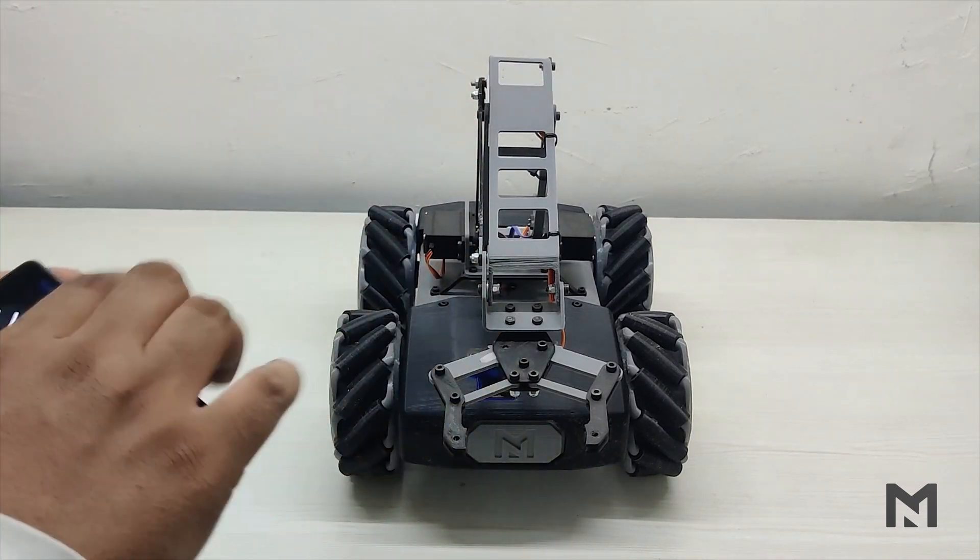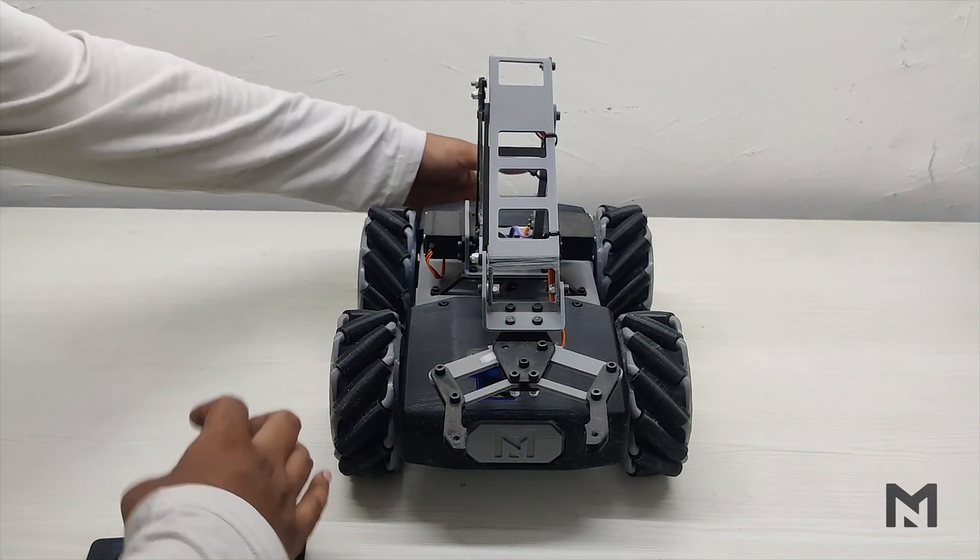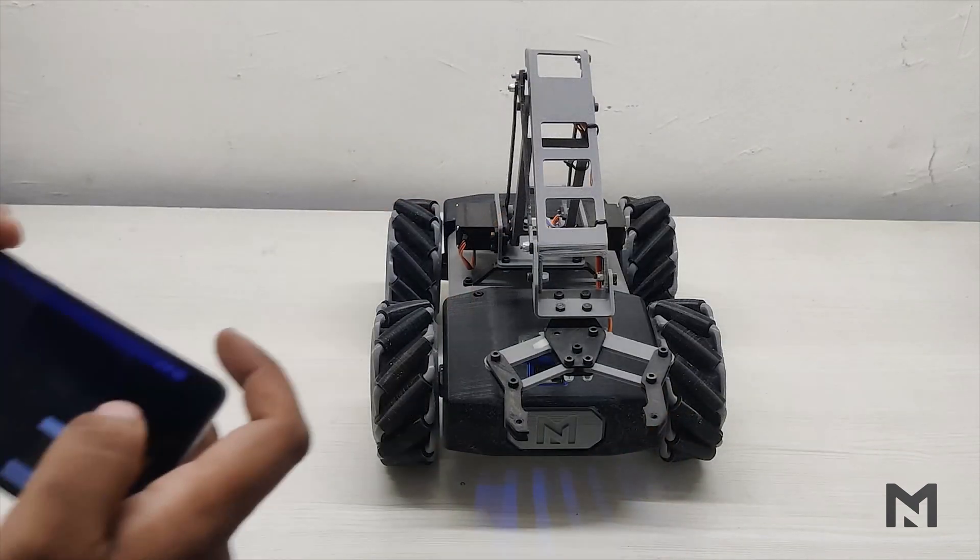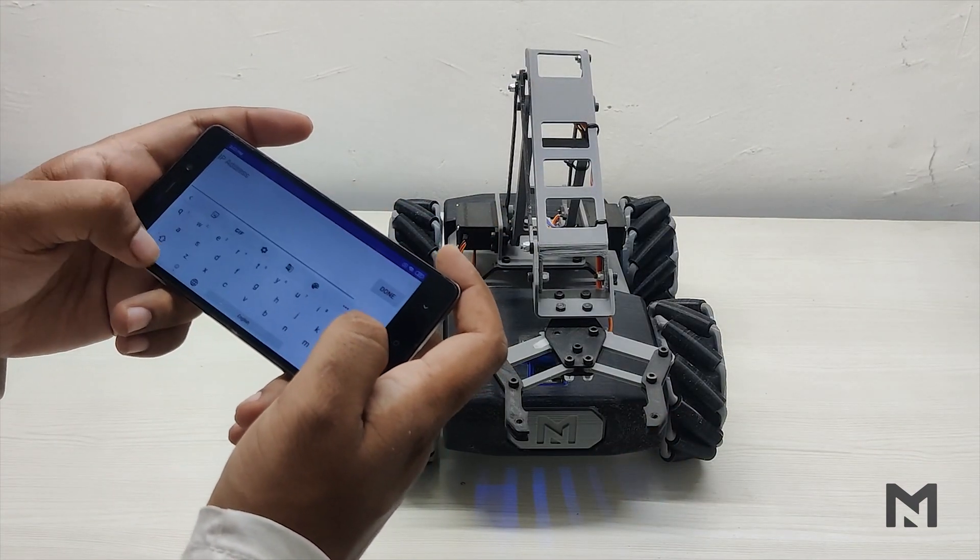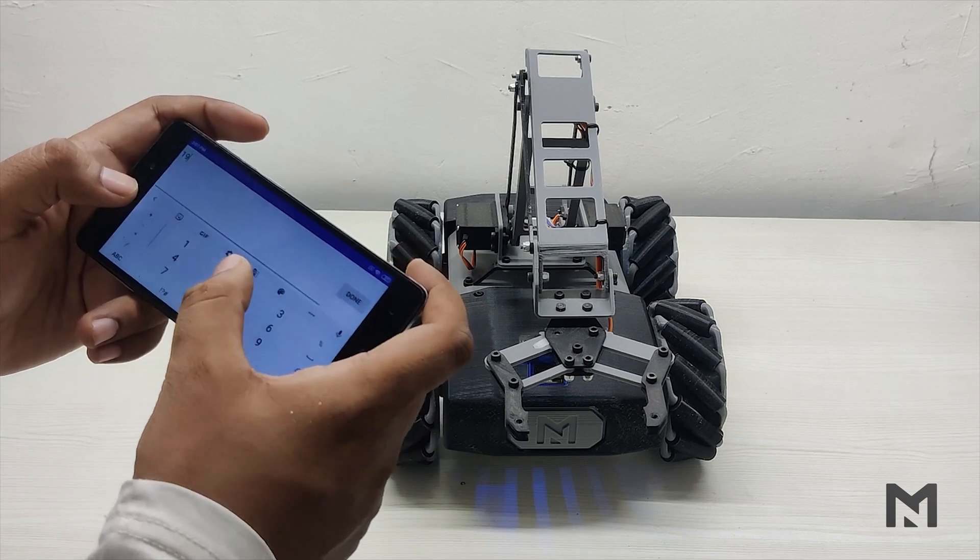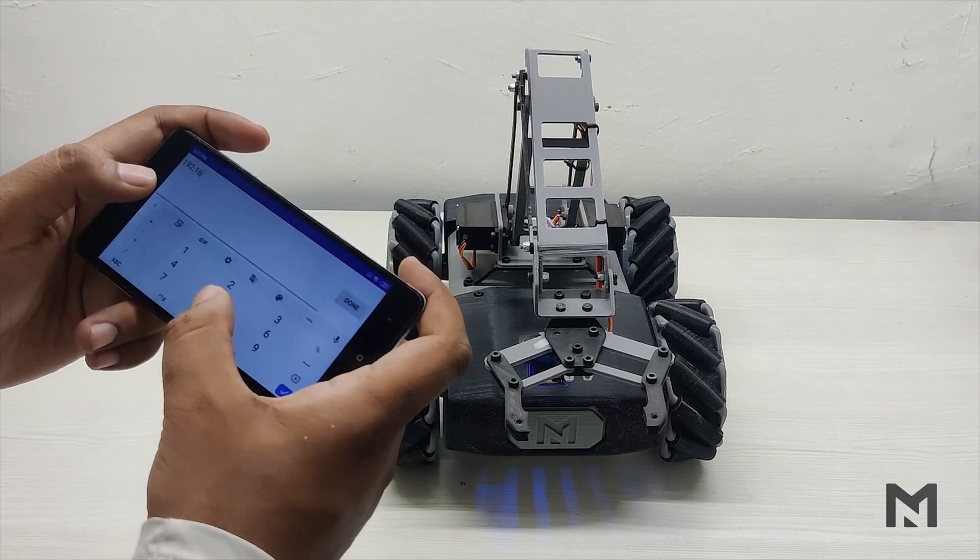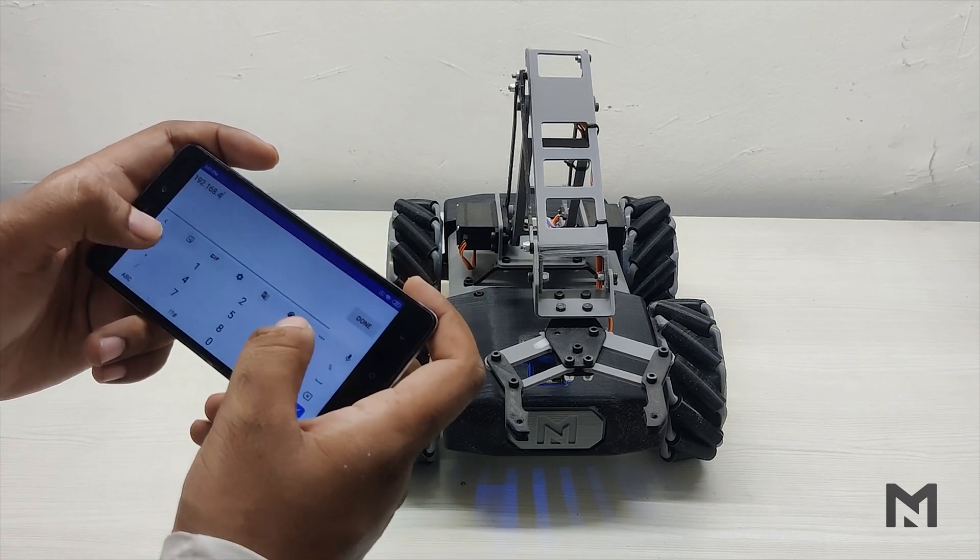Now the assembly of the robot is completed and we'll test it. First I will switch it on from the bottom button and then open the Wi-Fi hotspot. When the robot is connected to the hotspot, then I will insert the IP address which we have generated from the code.